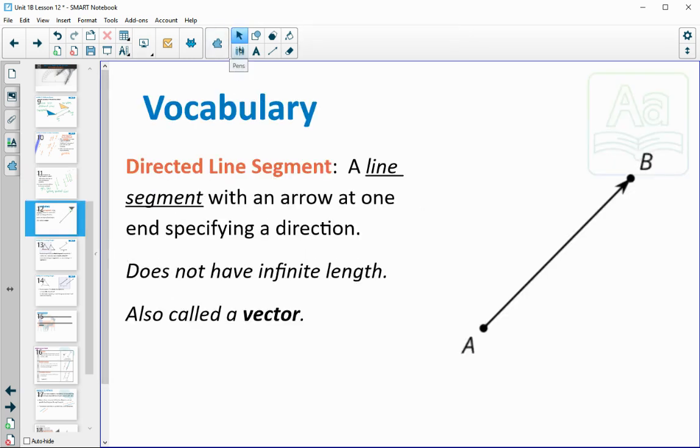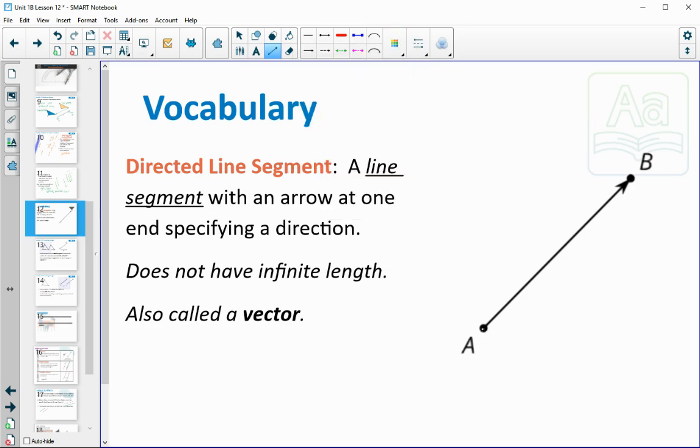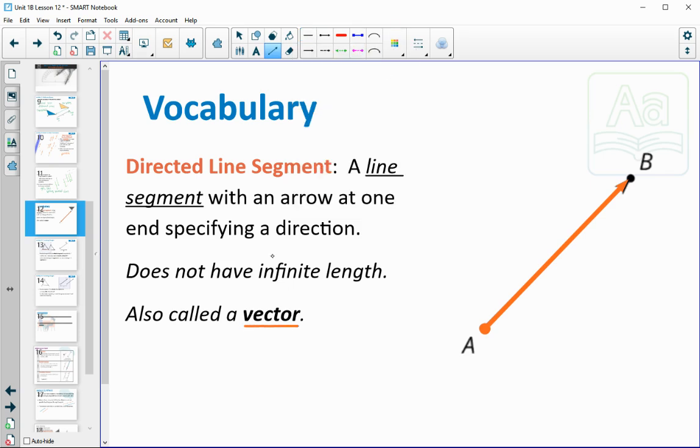All right, then we have this vocabulary word. If you flip to your lesson summary, you'll see this at the bottom. You heard me say this term, directed segment, when I was talking about the translation. So a directed segment is a line segment. It starts and stops at a point, it just also shows you a direction. So it has this set length. The arrow doesn't mean that it goes on forever, it's just showing you the direction the translation is moving. So it has a set length and it has a direction. As you get higher in math, you'll also see this called a vector. For geometry, we're going to be calling it a directed line segment this unit.